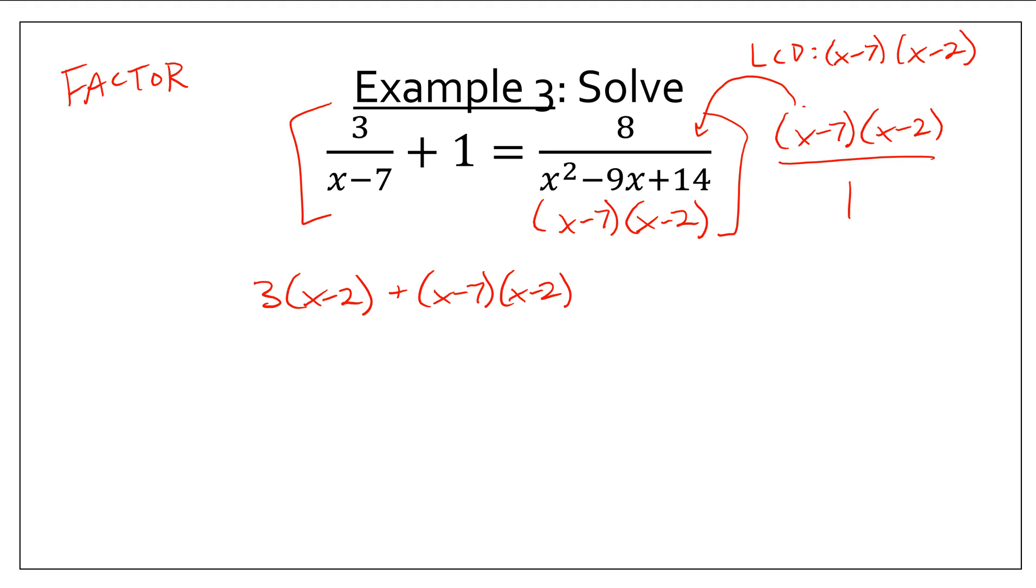But what will be easy is, look what happens when I multiply it times the last fraction. The x minus 7s cancel, the x minus 2s cancel, and I'm left with just what was on top, 8. So, that's easy. So, multiplying by the LCD, just don't forget to factor first because you should be able to make the problem a little less complicated for you.